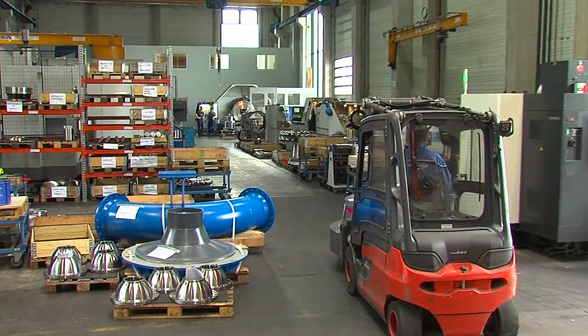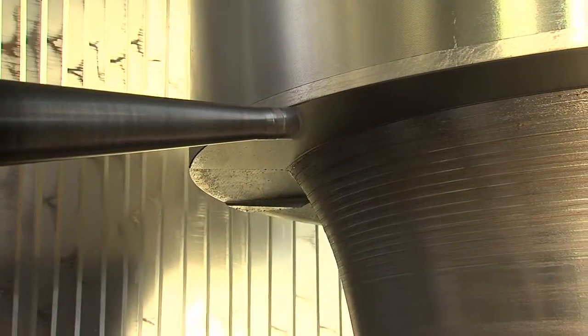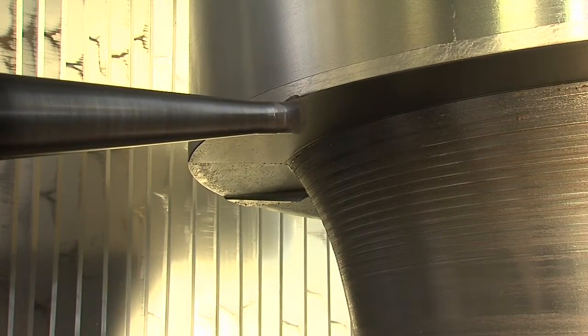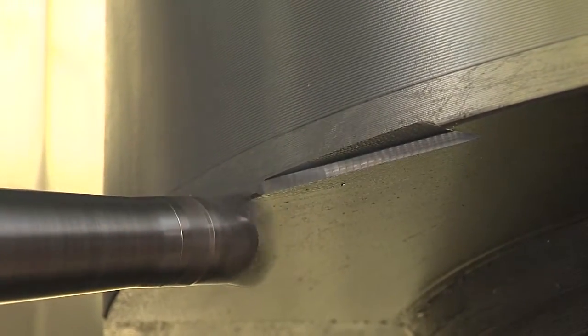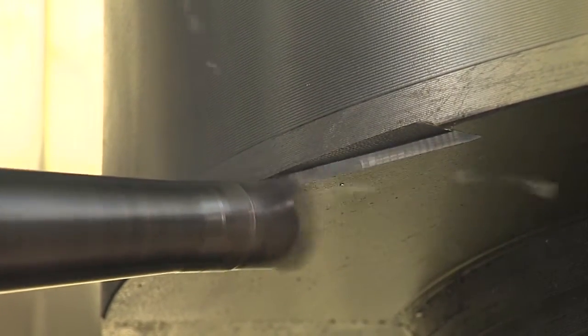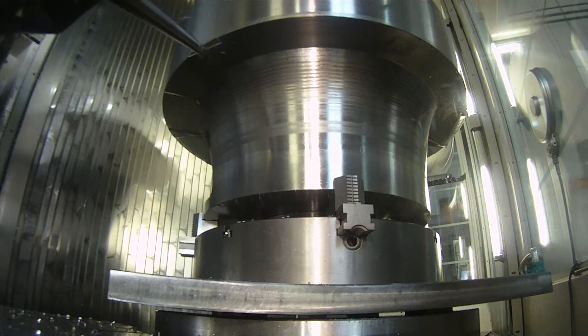When selecting the material, special attention is paid to high tensile strength and wear resistance required inside the turbine. The milling work can last up to 400 hours depending on the material and the size of the runner.